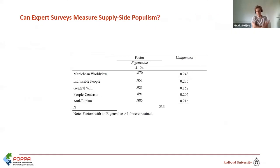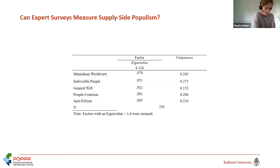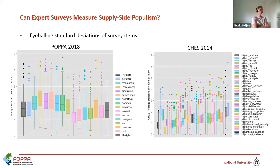We measured populism with five items and then used statistical tools to check whether these items are actually representative of one single thing. The simplest way of explaining this is that we did an exploratory factor analysis, where we look at whether they load on one dimension. What these results show is that they clearly do load on one dimension, and also that these items have relatively high uniqueness — meaning they are all quite important to measure the underlying latent construct. We call that latent construct populism, which does suggest that you can measure populism with an expert survey using these items.